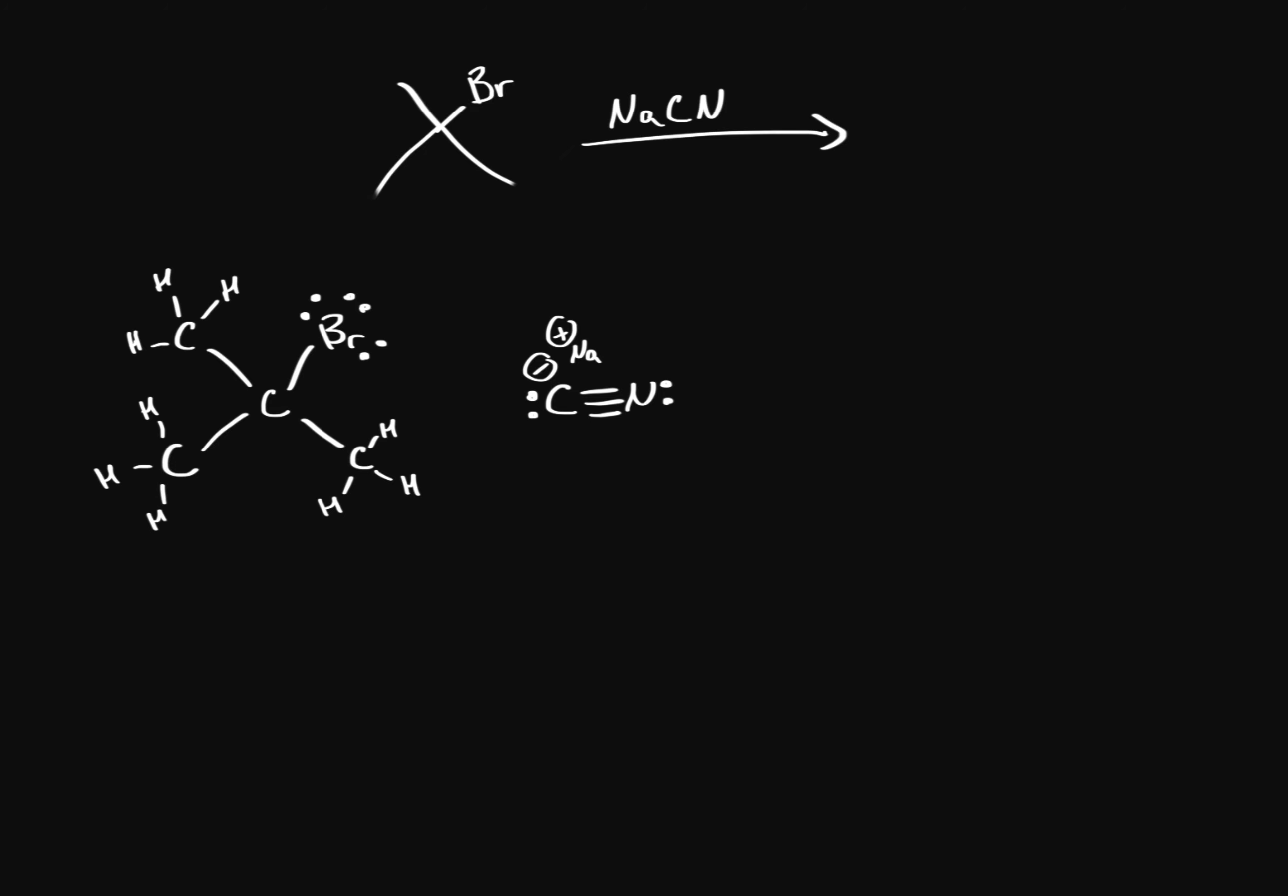The first step is when this bromine takes away this bond with it, these electrons, and takes it as a lone pair. Then we get a little intermediate, so we get this carbon right here with a positive charge. Just before we draw, I'll draw lines to represent the hydrogens over here.